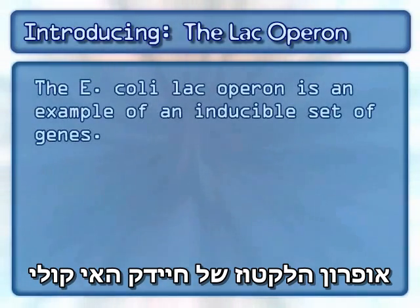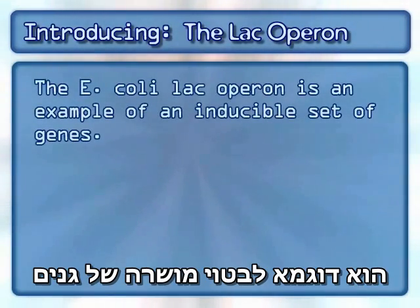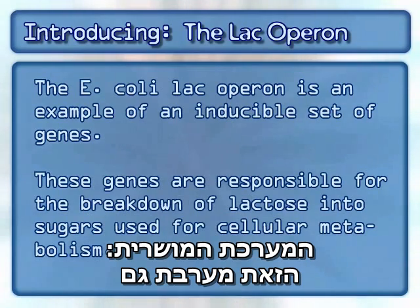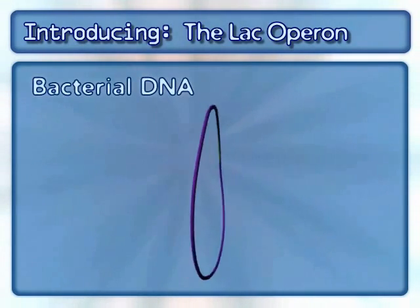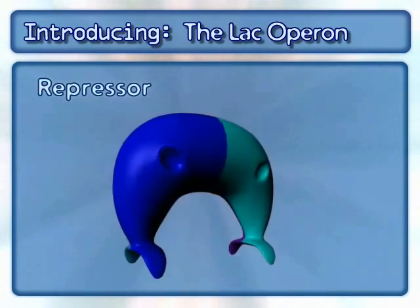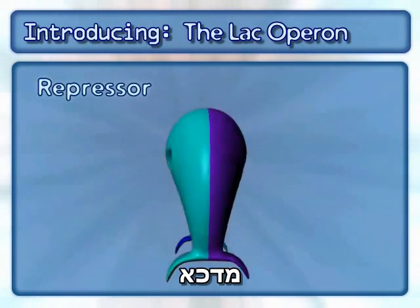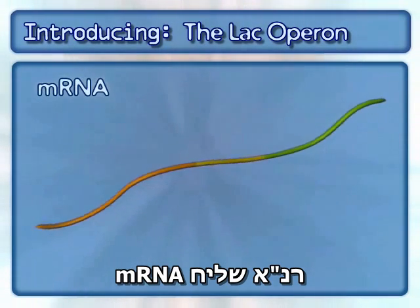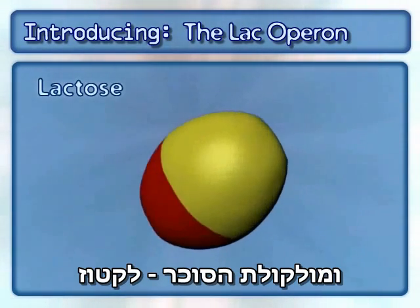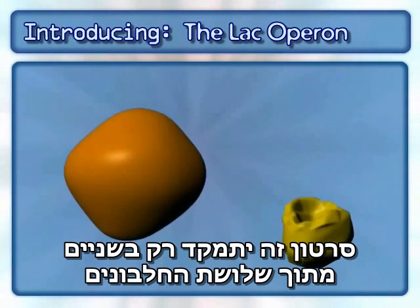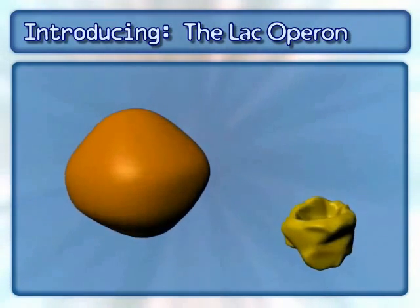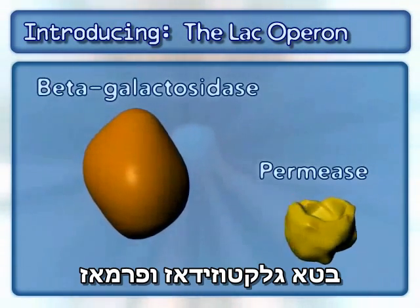The E. coli lac operon is an example of an inducible set of genes. These genes are responsible for the breakdown of lactose into sugars used for cellular metabolism. This inducible system also involves bacterial DNA, a repressor, mRNA, and the sugar molecule lactose. This animation will only focus on two of the three proteins encoded by the lac operon: beta-galactosidase and permease.